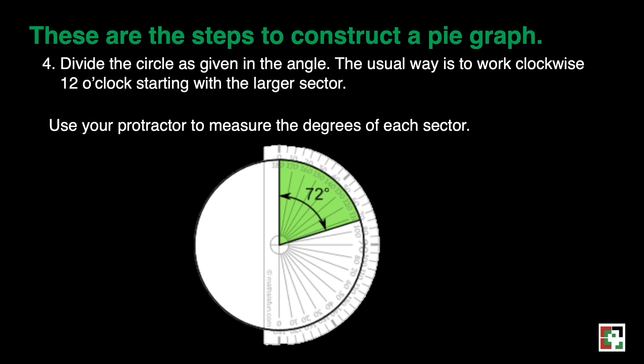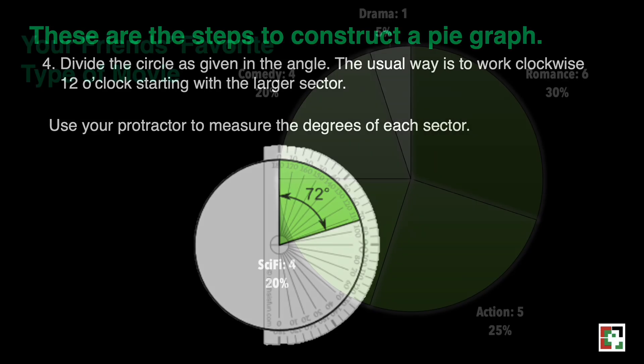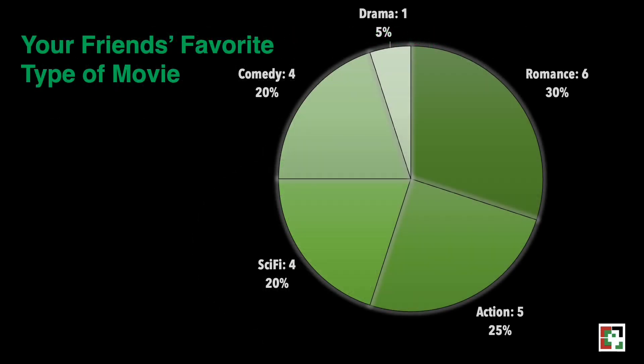Next, divide the circle as given by the angle. The usual way is to work clockwise, starting at 12 o'clock with the larger sector. Use your protractor to measure the degrees for each sector. When you're done, you should come up with this kind of pie graph.